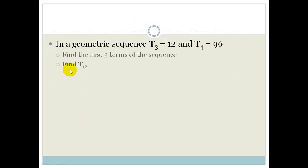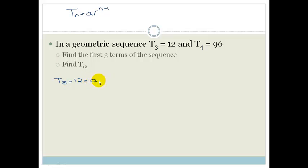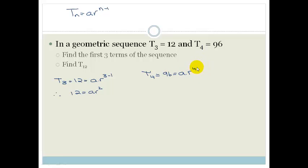Let's do another example. In a geometric sequence, T3 is 12 and T4 is 96. Find the first three terms and then find T12. We know Tn equals AR to the n minus 1. So T3: 12 equals A times R to the 3 minus 1, giving us 12 equals AR squared. And T4: 96 equals A times R to the 4 minus 1, giving us 96 equals AR cubed.